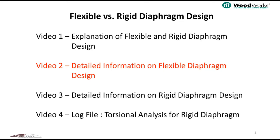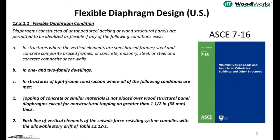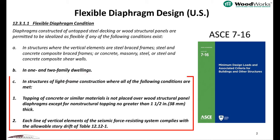we also discussed that ASCE 7-16 and SPDWS do permit designers to assume flexible diaphragm distribution only. For example, the American Society of Civil Engineers 7-16 clause 12.3.1.1 permits diaphragms from one or two family dwellings and certain light frame wood diaphragms to be idealized as flexible.